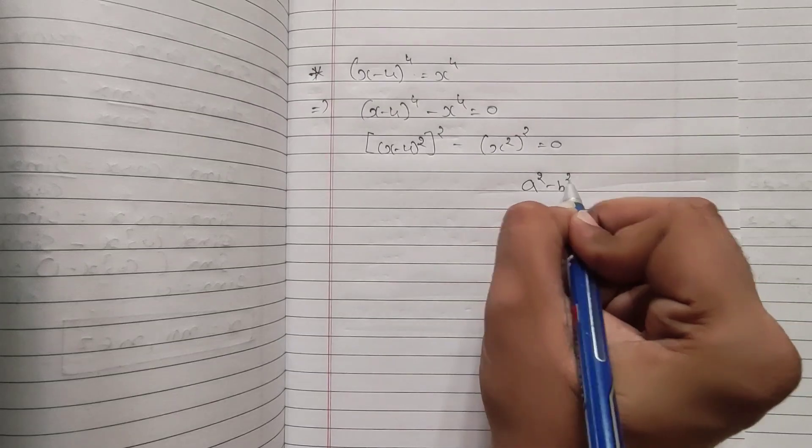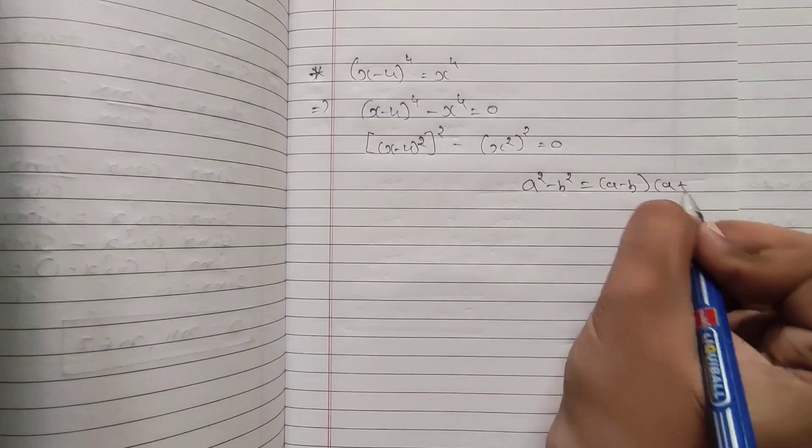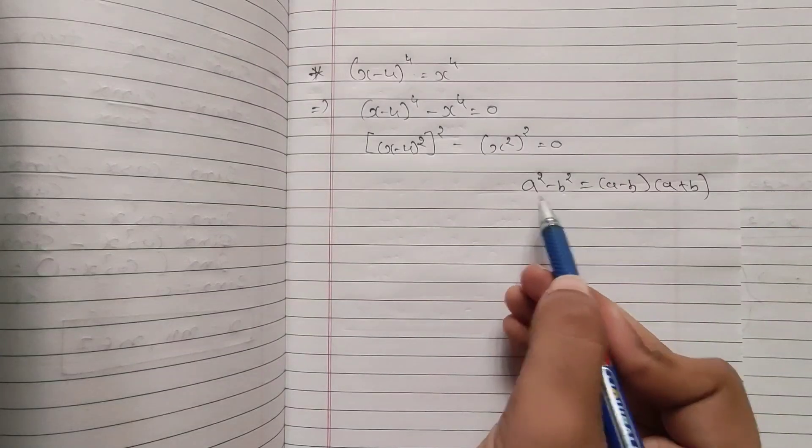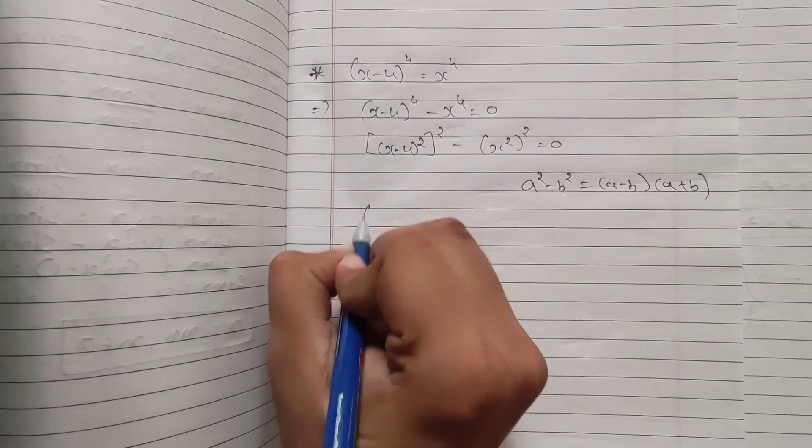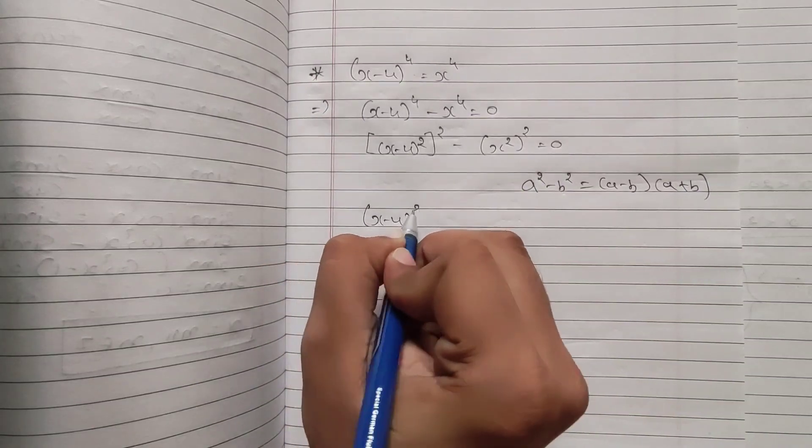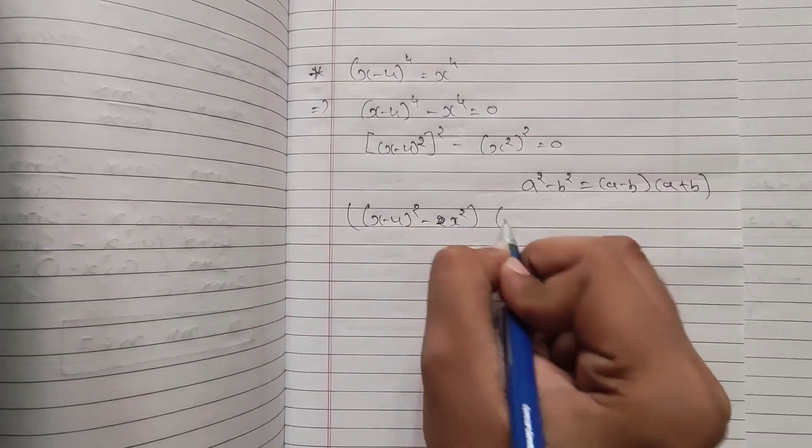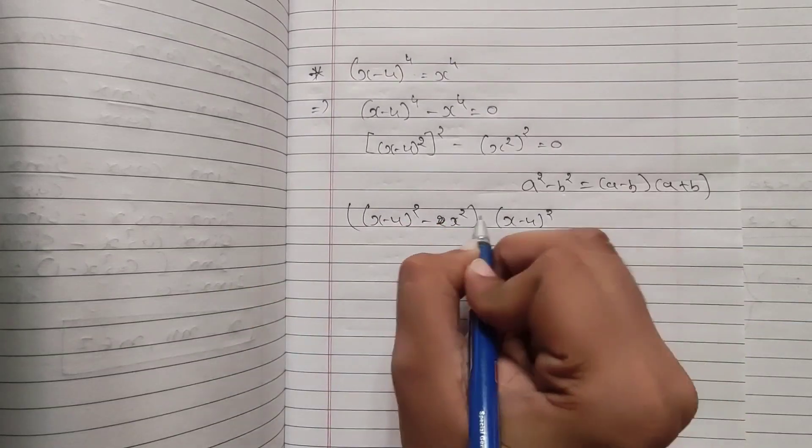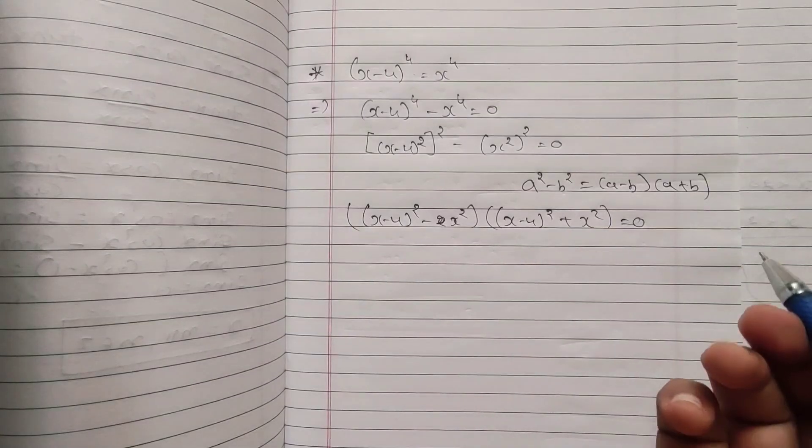I'm sure all of you know that whenever we have a² - b², I can write it as (a-b)(a+b). So I will apply the same formula in this equation. I can write it as [(x-4)² - x²][(x-4)² + x²] = 0.